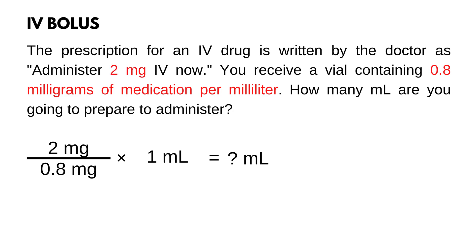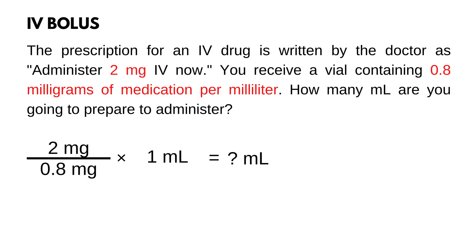Make sure that both units on top and bottom are the same because they need to cancel out — in this case, mg — otherwise you need to do some conversions. Now that the formula is completed, calculate: 2 mg divided by 0.8 mg times 1 milliliter. Milligrams cancel out and the answer is 2.5 milliliters.